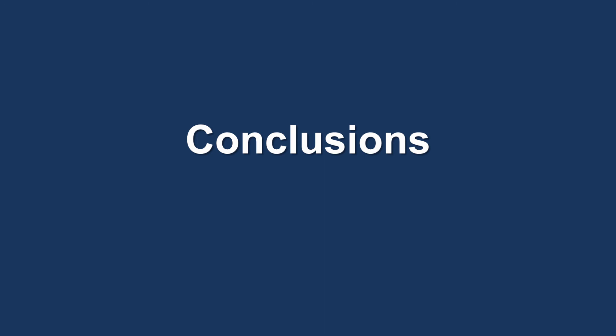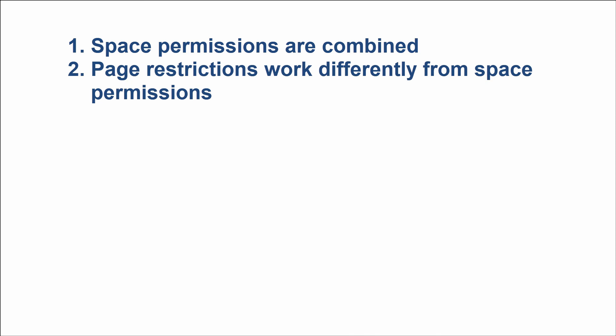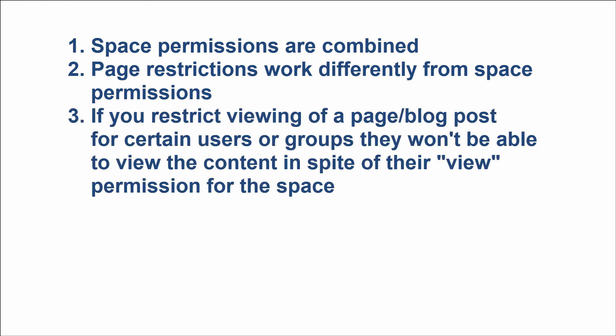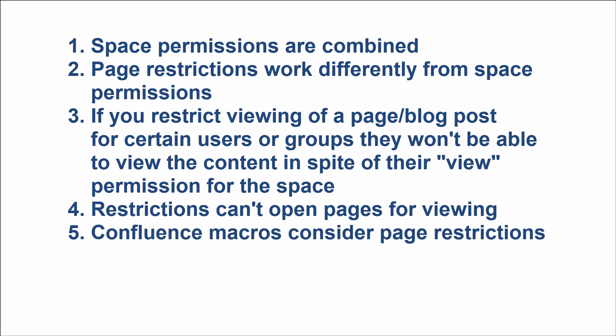To sum up: space permissions given to users directly and via groups are combined. Page restrictions work differently from space permissions – pages are open to viewing or editing by default, but you can restrict viewing or editing for certain users or groups. Restrictions do not grant the view permission if it was not explicitly set in the space permissions. Confluence macros also take page restrictions into consideration – for example, the Children Display, Include Page, Page Tree, and Page Properties Report macros will only display pages available to you and hide the restricted ones.